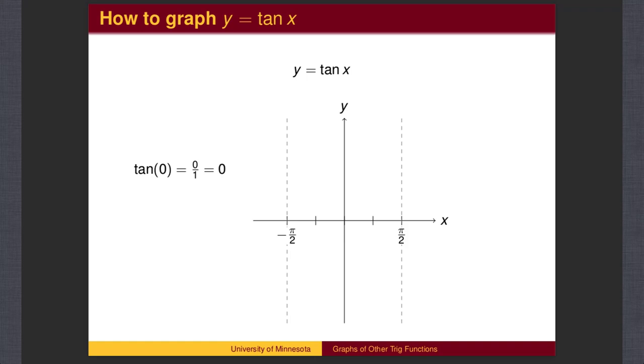Sine of 0 equals 0, and cosine of 0 equals 1, so the tangent of 0 is 0 over 1, which is 0. So we will place a point at (0, 0).